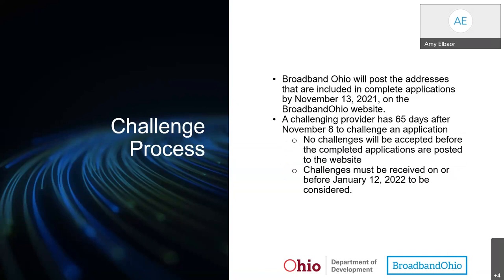On Monday, November 8th at 5 PM, the application process will close. Legislation mandates that Broadband Ohio post the addresses of complete applications by November 13th, 2021 on the Broadband Ohio website. A challenging provider then has 65 days after November 8th to challenge an application. As applications are submitted, they will be reviewed to make sure all required components have been submitted with the appropriate detail. If the Broadband Ohio office finds that an application is incomplete, the applicant will be notified of the deficiencies and given an opportunity to remedy.